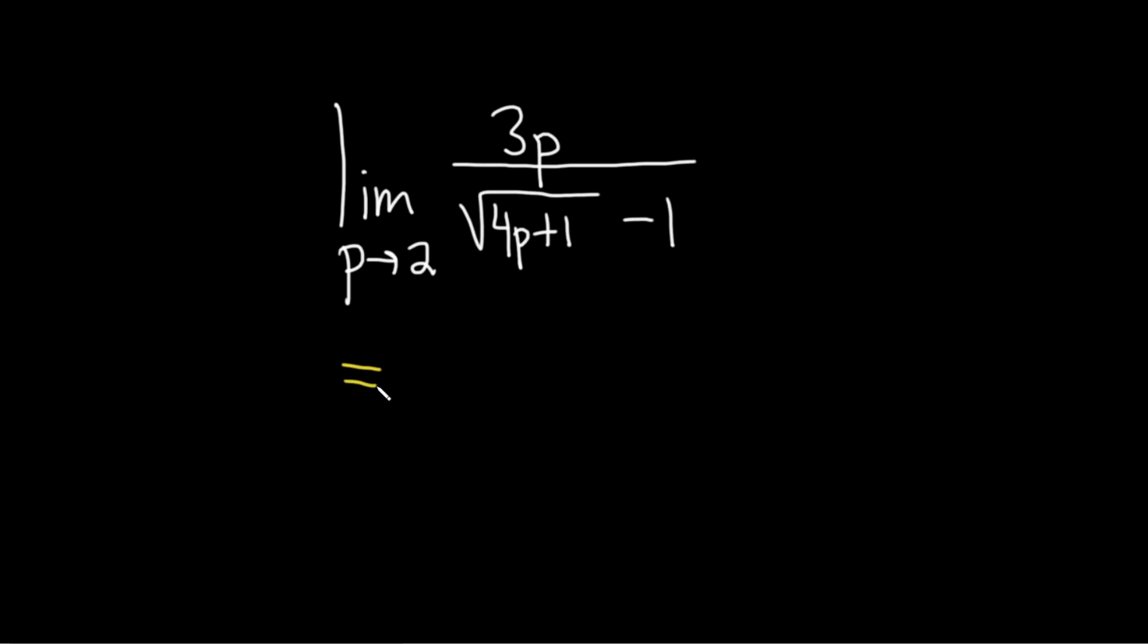So let's try to do that and see if it works. Basically we're going to take this 2 and put it everywhere we see a p. And when we do that we drop the limit sign.